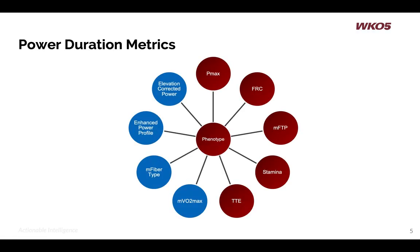We actually have a more broad 360-degree view being produced by the model. At the core of it all is your phenotype — what is your rider type? Then you have power duration metrics of Pmax, FRC, MFTP, STAMMA, and TTE. There is an educational series on these — look at the WKO5.com Quick Start Guide under Power Duration Education. We can also derive modeled FTP, modeled fiber type, an enhanced power profile where you can look at your second-by-second performance against others, and even elevation-corrected power showing how your body would react to elevation.